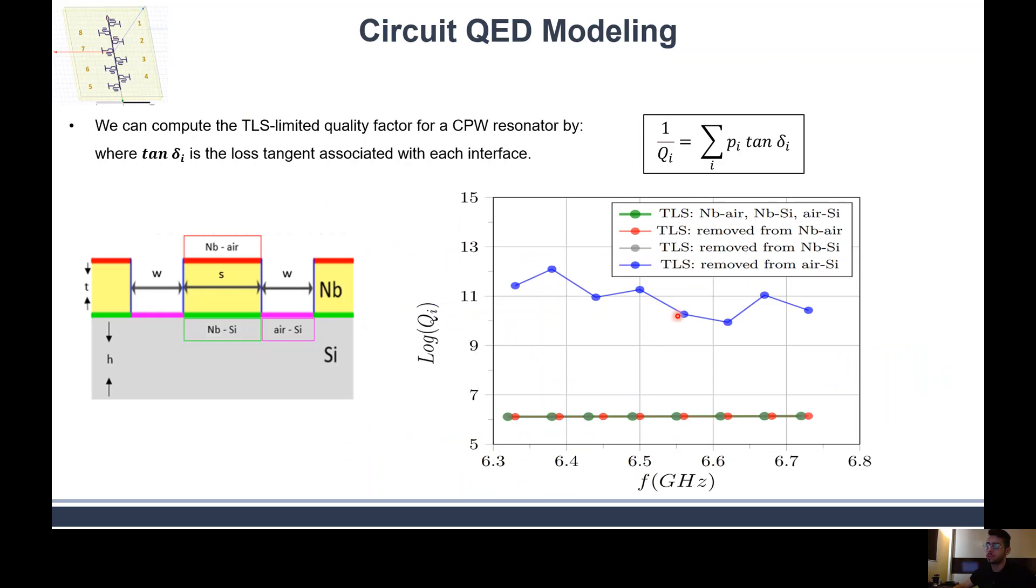We can have a detailed study from the simulation that lets us know which region is more dominant, which region affects the quality factor most, and which region TLS oxides can grow more than others. After we put oxides almost everywhere and remove oxides at each region once at a time, we can see the air-silicon interface is the region in which if we remove oxides, we will have a significant improvement in the quality factor. This prediction is coming from the simulation.